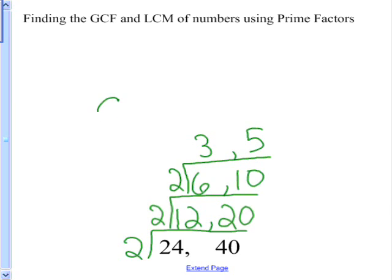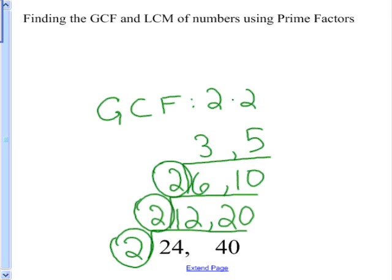Now to find the GCF, look at all the prime factors that went into both numbers. So 2 went into 24 and 40, 2 into 12 and 20, 2 into 6 and 10. So your GCF is 2 times 2 times 2, which is 8.